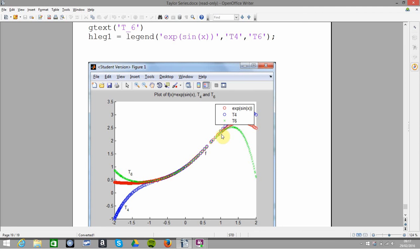Red is the real function. T4 is order four, so that'll give me up to x cubed. And T6 is up to x to the five.